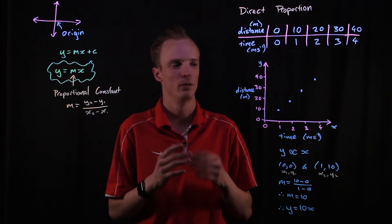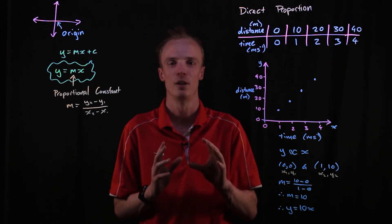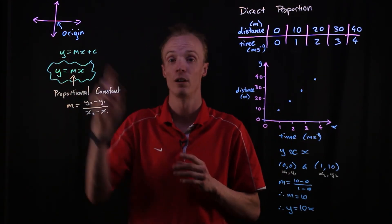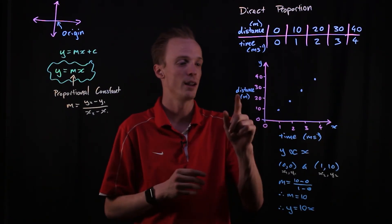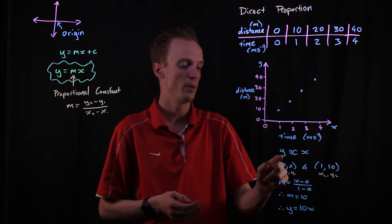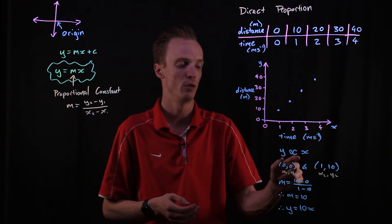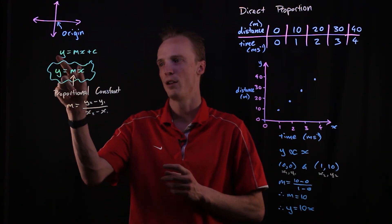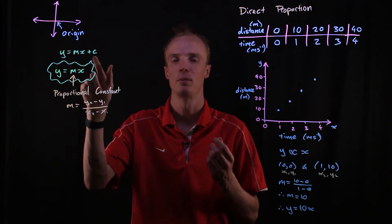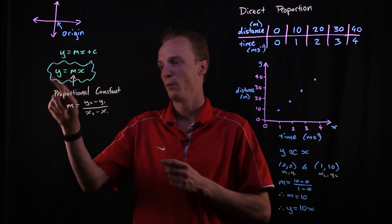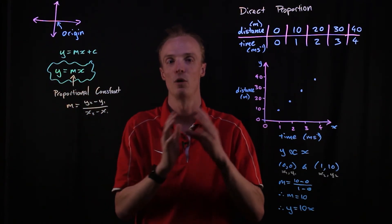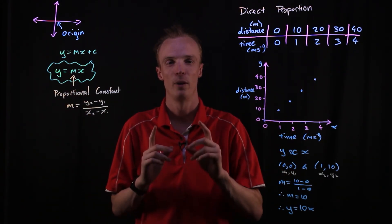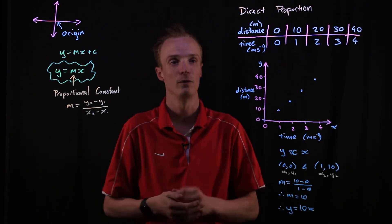To summarise: when looking at relationships between two variables, if we have a linear relationship, we can check whether it passes through the origin. If it does, we say the two variables are directly proportional, represented as y ∝ x. The equation becomes y = mx — not y = mx + c — since the y-intercept is zero. The gradient m is called the proportionality constant, and finding it gives us the full equation of the relationship.